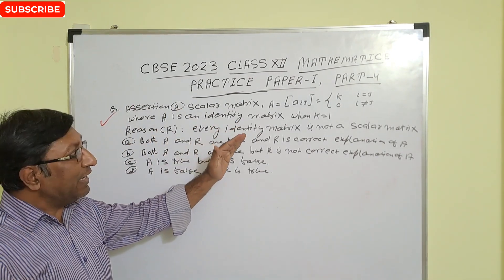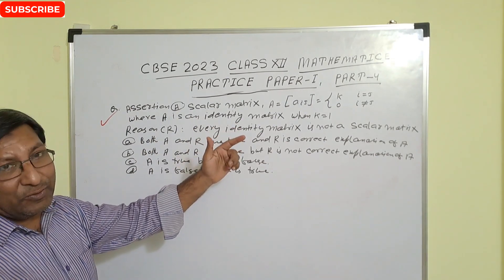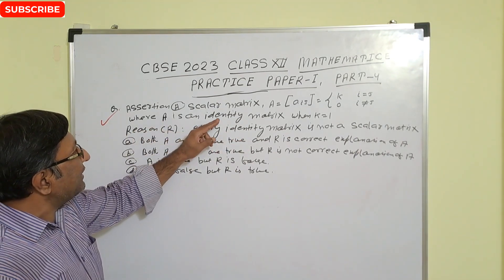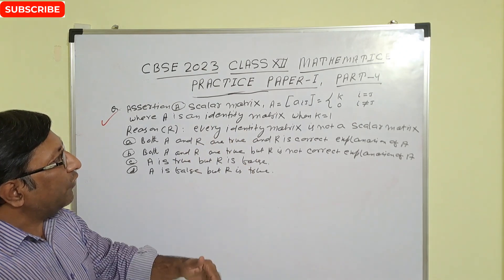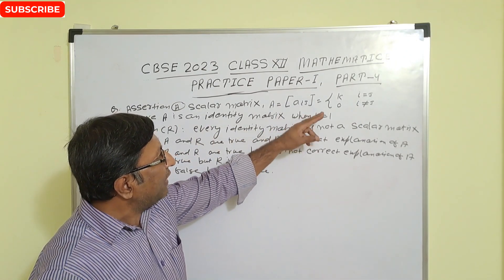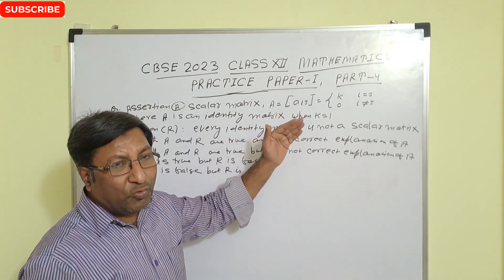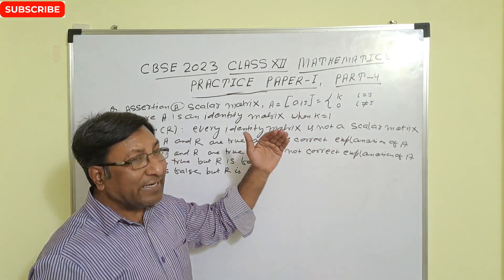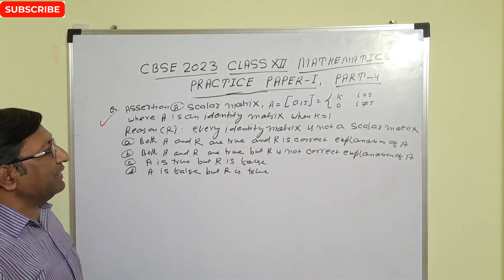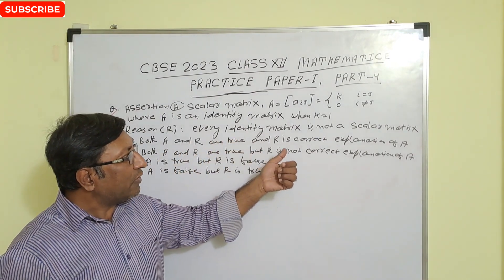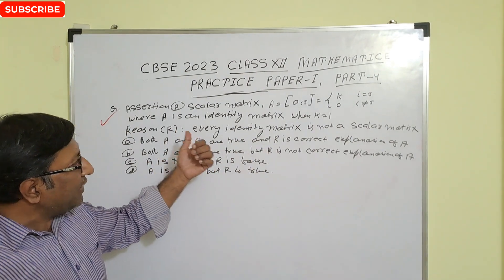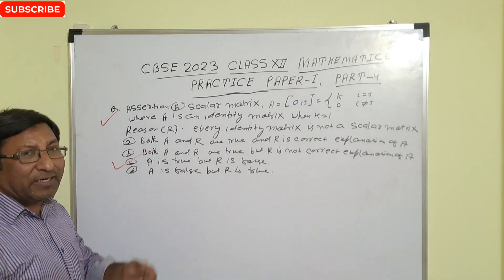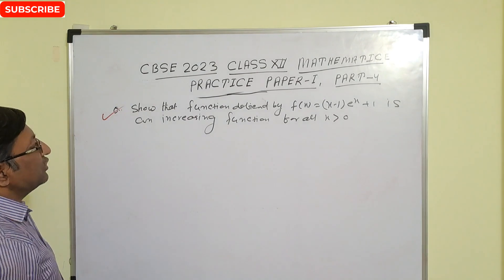Next question: assertion-reason type. A scalar matrix is defined as A = [a_ij] where a_ij = k when i = j and 0 when i ≠ j. When k = 1, the diagonal elements a_11, a_22, a_33 are all 1 and off-diagonal elements are 0, making it an identity matrix. The reason states every identity matrix is not a scalar matrix, which is false — every identity matrix IS a scalar matrix. So assertion A is true but reason R is false.